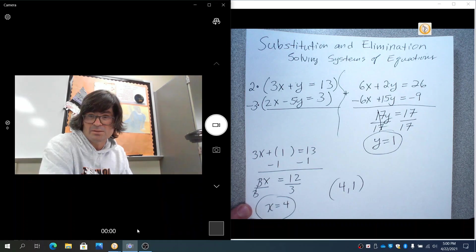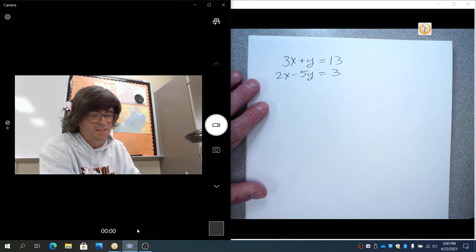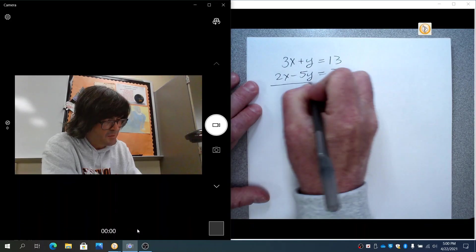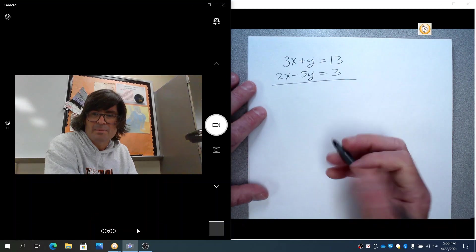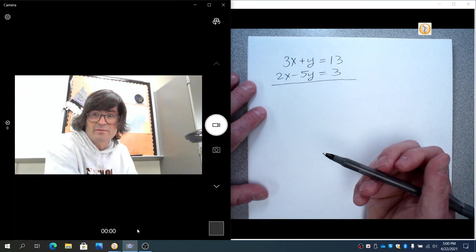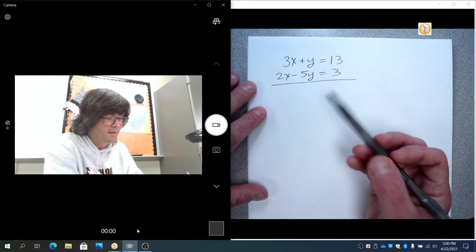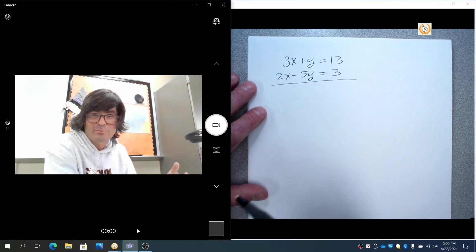I'm going to do this same problem again with substitution. That's another popular method. So I've written the same system of equations down again. And I'm going to pick one of the x's or y's and solve for that x or y. And then I'm going to use what I solve and put it into the other equation. That's a lot of words. Let me show you how it works.